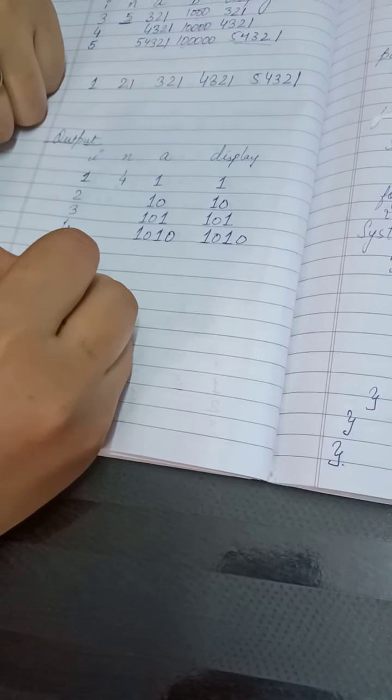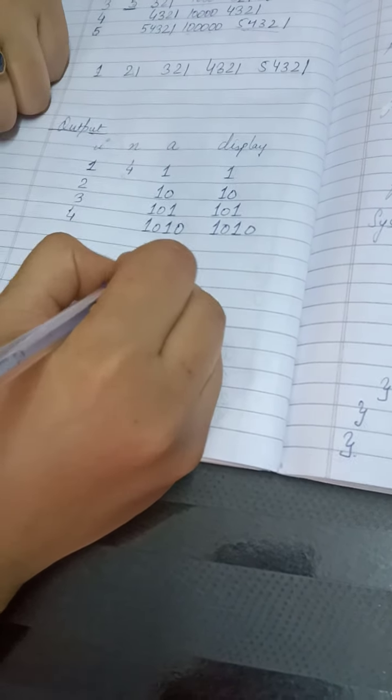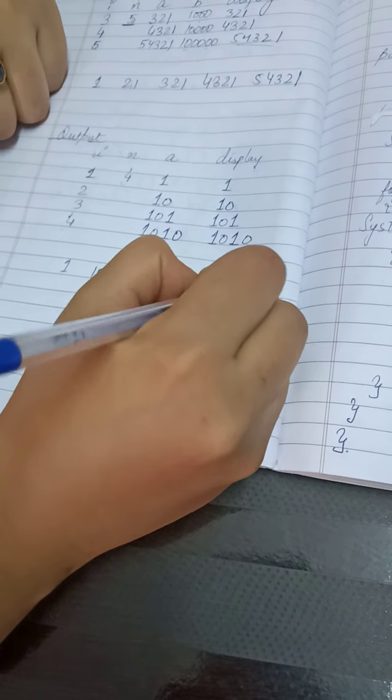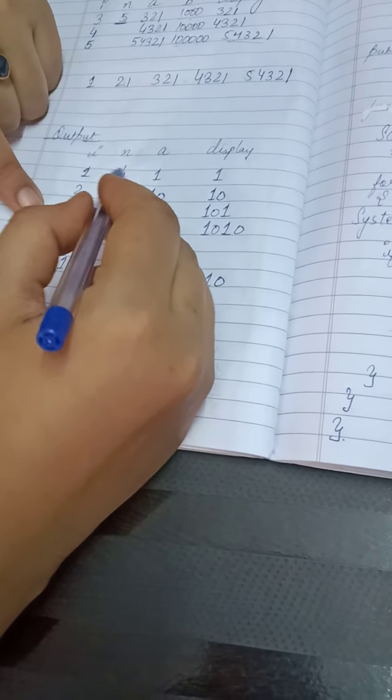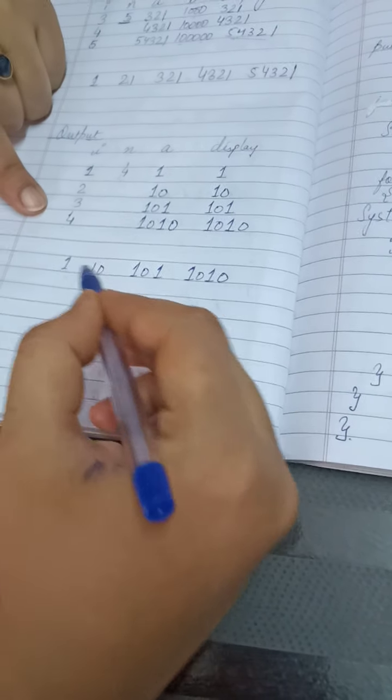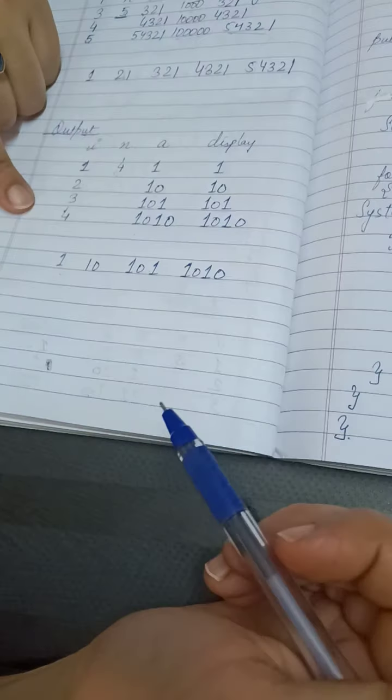Now let me print like 1, 10, 101, and 1010. Because I have taken the value of n as 4, that is why it will print only 4 values or you can say 4 terms. Thank you so much.